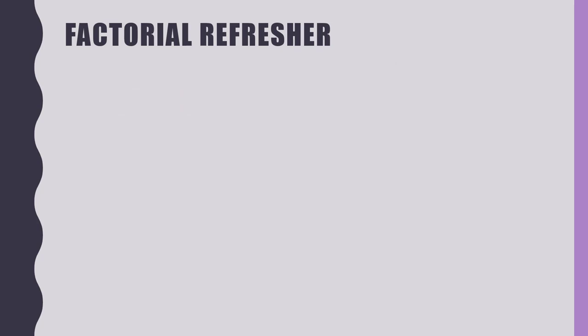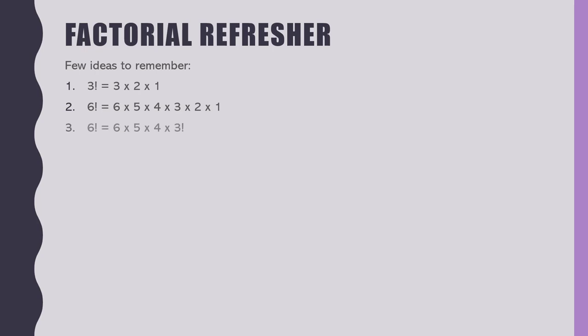Quick factorial refresher. 3! = 3 × 2 × 1. 6! = 6 × 5 × 4 × 3 × 2 × 1. Importantly, 6! = 6 × 5 × 4 × 3!, or 6 × 5 × 4!, or 6 × 5!. Those are all the same thing — this will be useful in a few minutes. Also remember: 0! = 1. If you want a proof of that, we can do it after class.